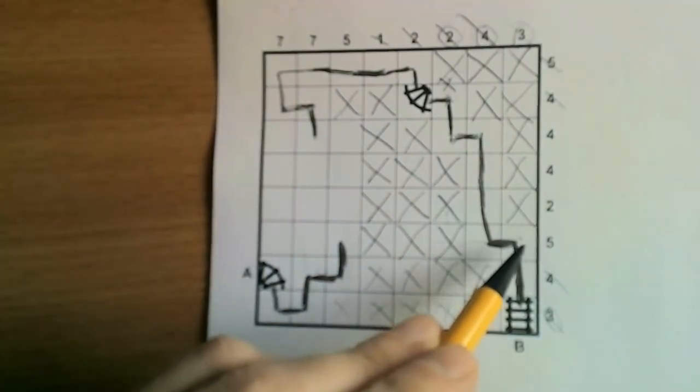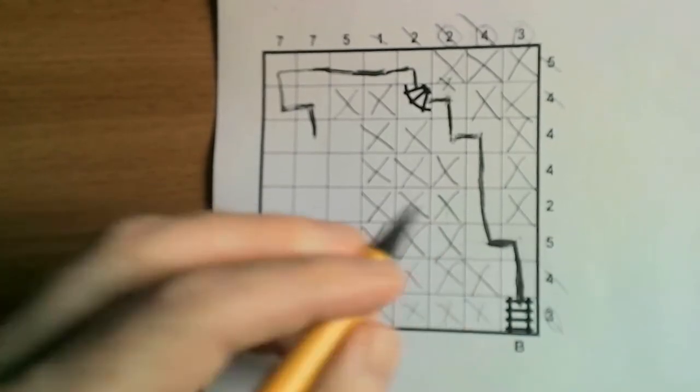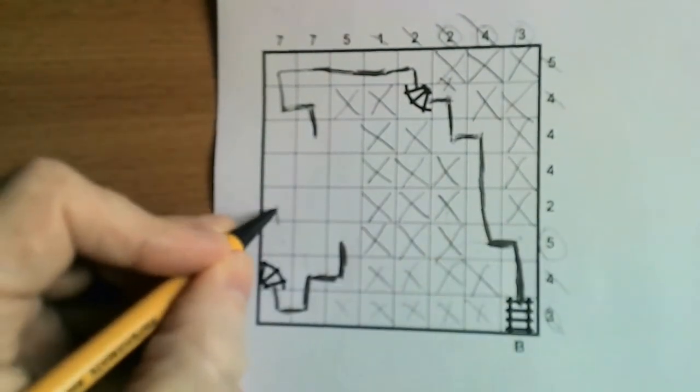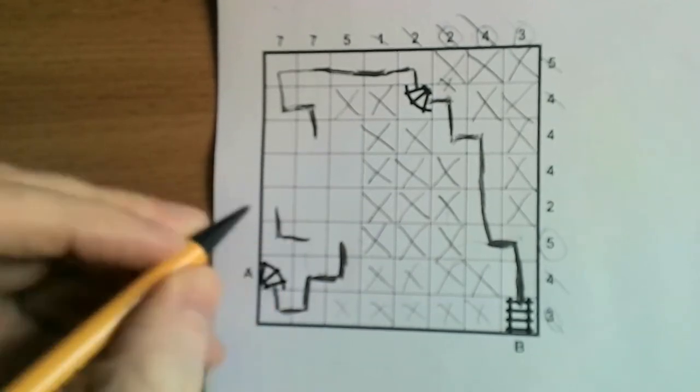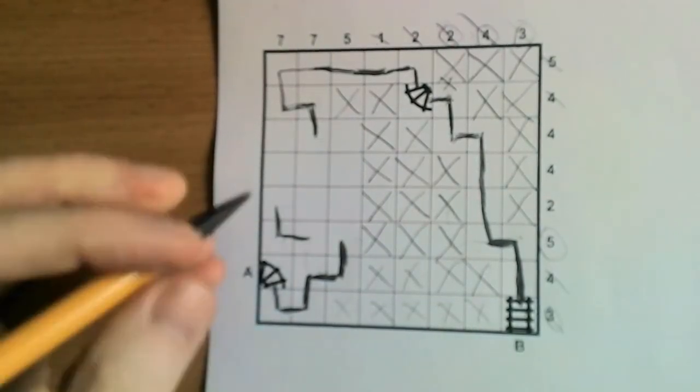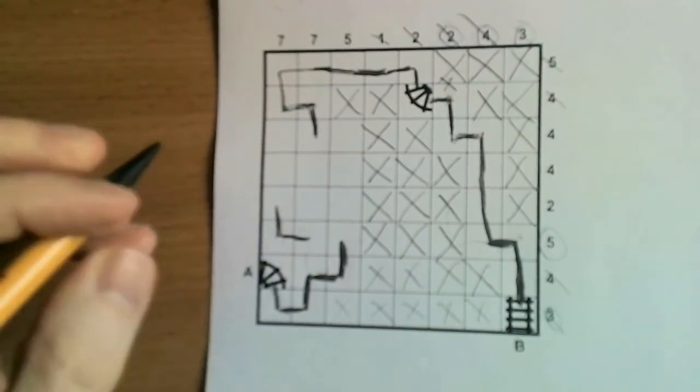Now let's look at this row where we have one, two, three, four, five and five to place. So we know that the loop must visit these two squares. Now does the loop go up here or does it move across?